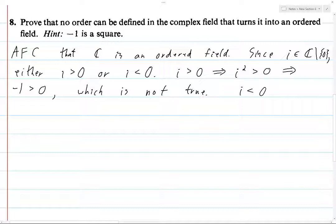Conversely, if i is less than 0, then negative i is positive. That's another property of ordered fields. And so again, we have something positive, so if we square it, then we'll get something that's also positive.